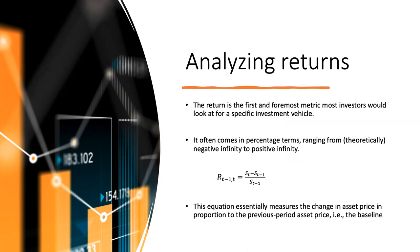Now let's look at return. Return is really about percentage terms; otherwise it would be difficult to compare asset A versus asset B. When we calculate the return, we take the price at the current time period minus the price at the last time period — this is the difference — then divide by the last period price as a normalizing denominator. This whole term is converted to a percentage, which we use to compare different assets. This percentage is unbounded, meaning it can go from negative infinity to positive infinity.